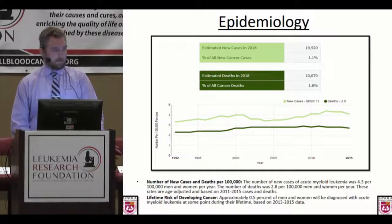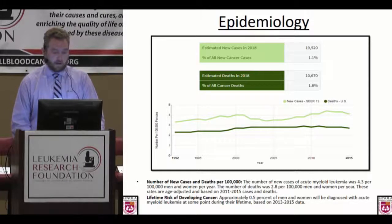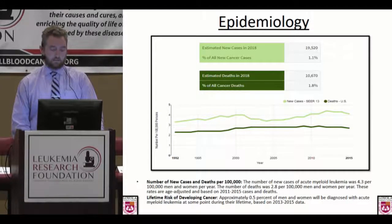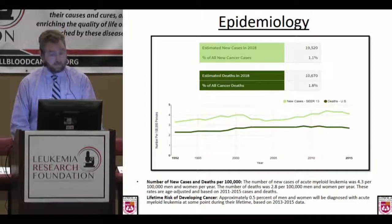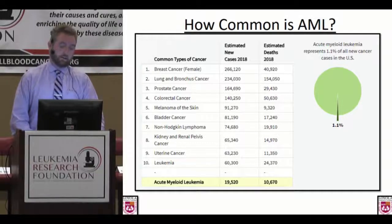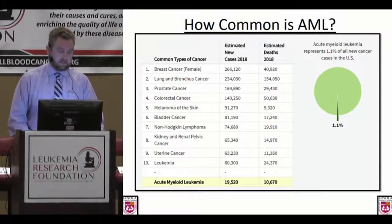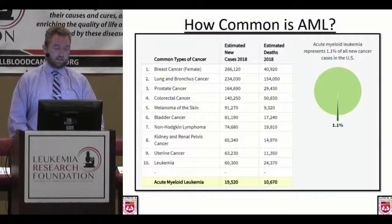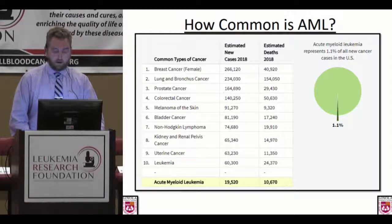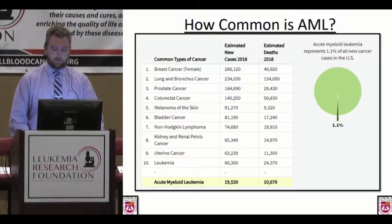How common is this? The short answer is it's not a very common disorder. It makes up about one percent of all cancer cases in America and about two percent of all cancer deaths, based on SEER data. Compared to other cancers it's very uncommon — annually in the United States there are about 250,000 cases of breast cancer and only about 20,000 cases of acute myeloid leukemia. So it is a rare cancer, but it's a very deadly one.